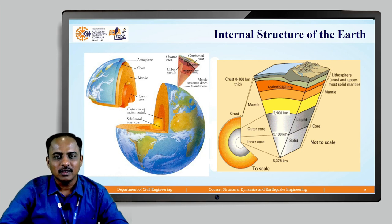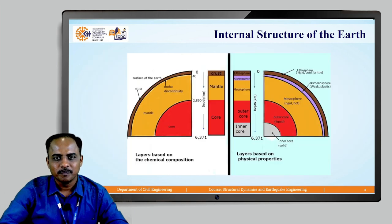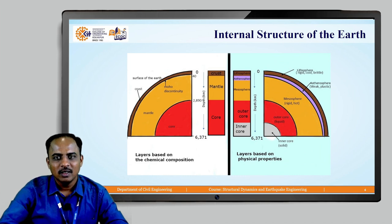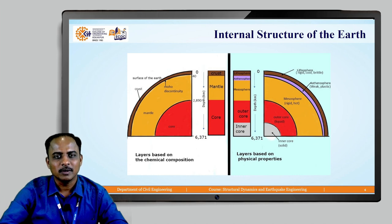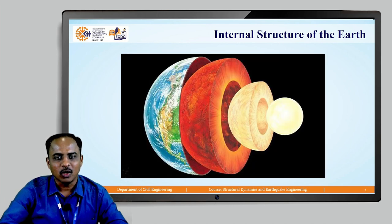You can see the depth: at 2900 kilometers from the surface we have the outer core, and at 5100 kilometers from the surface we have the inner core. The lithosphere is rigid and brittle. The asthenosphere below is weak and in a plastic state. Below that is the lower mantle or mesosphere, which is rigid and hot. The outer core is liquid and the inner core is in a solid state.